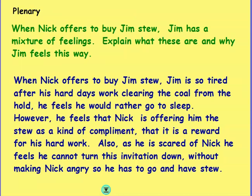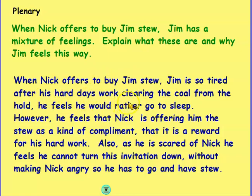For example, a question could be: when Nick offers to buy Jim's stew, Jim has a mixture of feelings — explain what these are and why Jim feels this way. Jim has a mixture of feelings, so I need to cover several feelings and explain what they are and why he feels this way. So I'm going to start: when Nick offers to buy Jim's stew, Jim is so tired after his hard day's work clearing the coal from the hold — he feels he would rather go to sleep. Here I've used evidence from the text: we know he's really tired after his hard day's work clearing the coal because it tells us that in the text, and I've explained that he feels he would rather go to sleep.